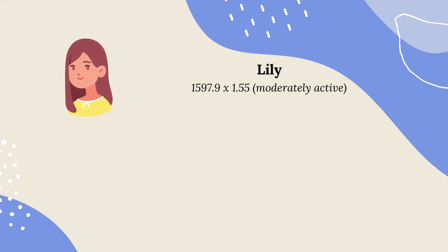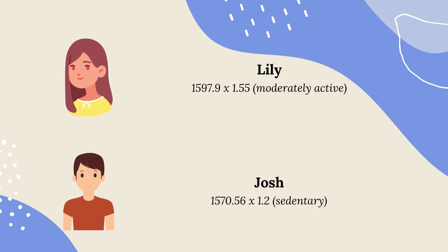Lily's equation would be 1,597.9 times 1.55, since she moderately works out. Josh's equation would be 1,570.56 times 1.2, since he doesn't exercise daily.